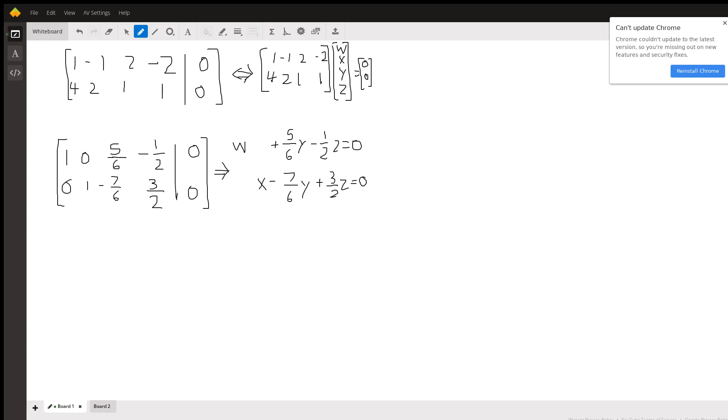Just like you asked for, I wrote it in matrix vector form right here. This is the augmented matrix form, this is the typical matrix form, and we have this vector w, x, y, z - that's the order your variables are in - and it equals zero, zero. Okay, so we're all set up.